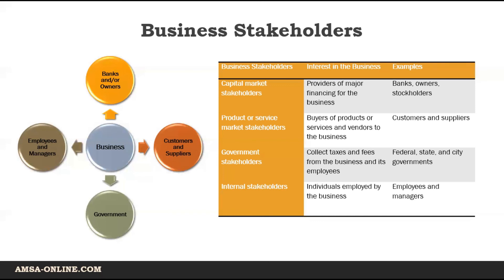Government stakeholders can be federal, state, county, city, or other regulatory bodies. The more successful a company, the more it will pay in taxes. Finally, internal stakeholders include managers and employees who depend on the continued success of a company to remain employed.